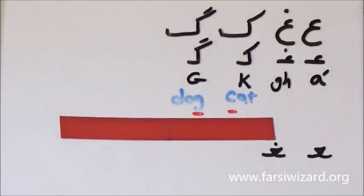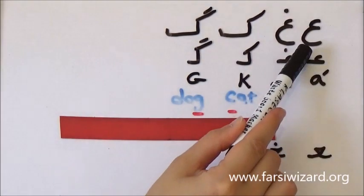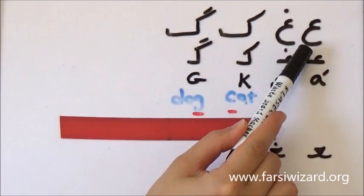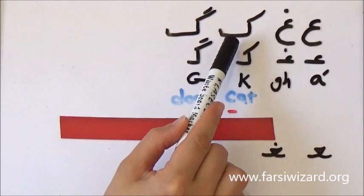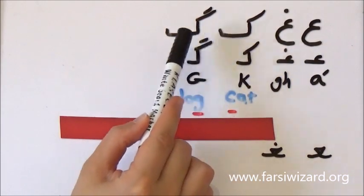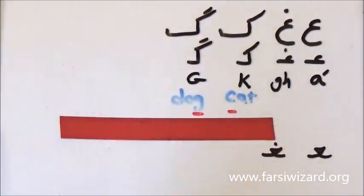Hello and welcome to my Farsi class. Today we are going to learn four more letters of the Persian alphabet: EIN, REIN, KAF, and GOF.